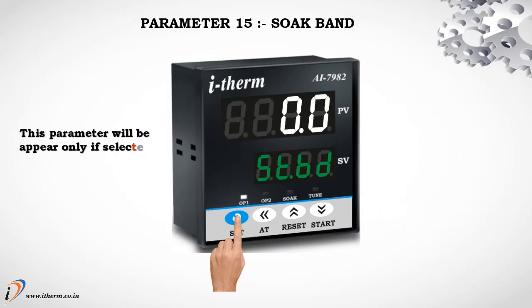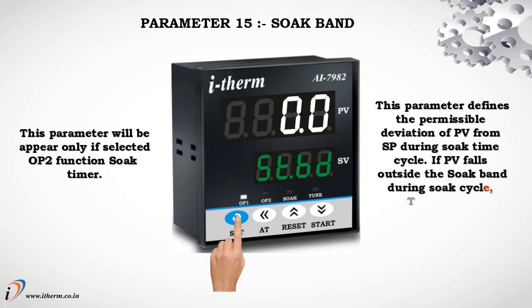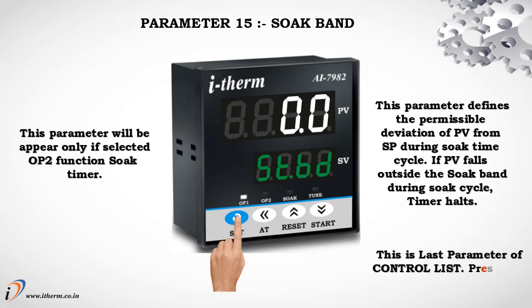Parameter 15: Soak band. This parameter will appear only if the selected output 2 function is soak timer. This parameter defines the permissible deviation of process value from set point during soak time cycle. If process value falls outside the soak band during soak cycle, the timer halts. This is the last parameter of the control list. Press Set key to enter in run mode.